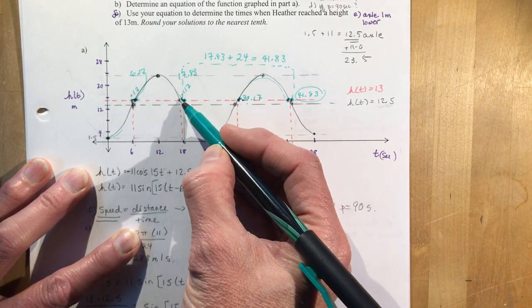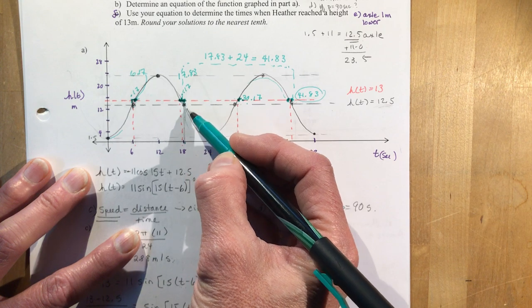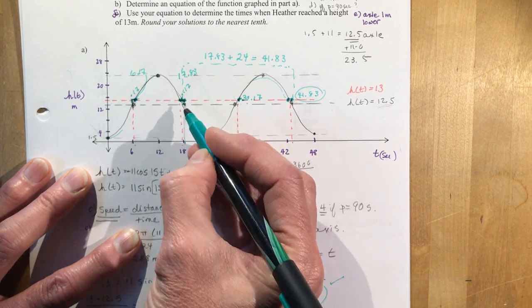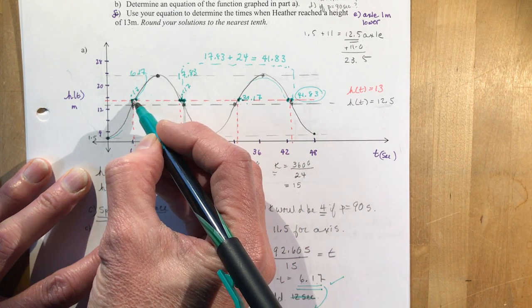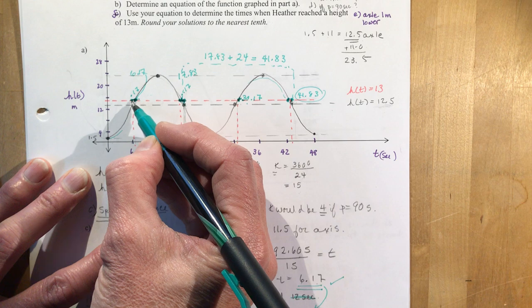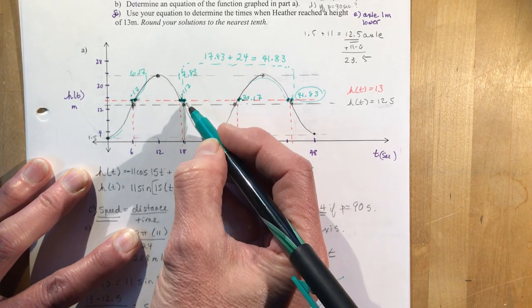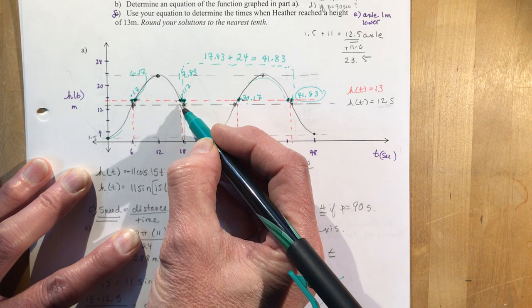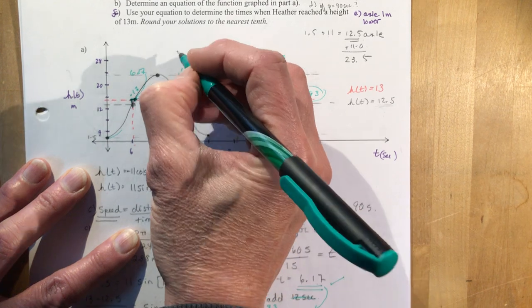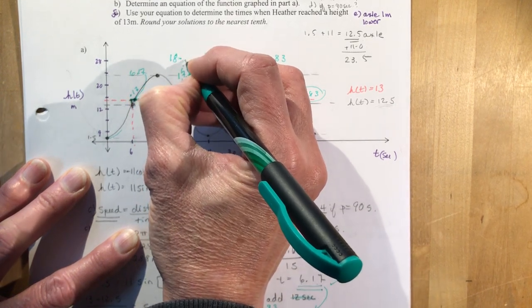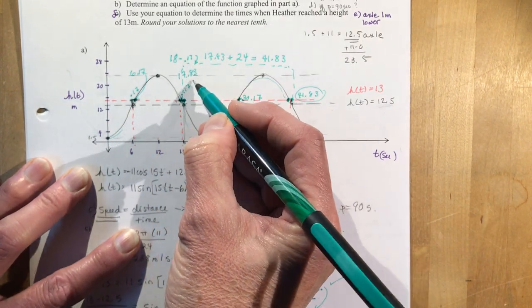To find this point, it has to be a little less than 18 and it's exactly the same distance away from the axis as this one was. We were 0.17 from 6, so we're going to be 0.17 from 18 to the left. We subtract 0.17 from 18, which gives you 17.83.